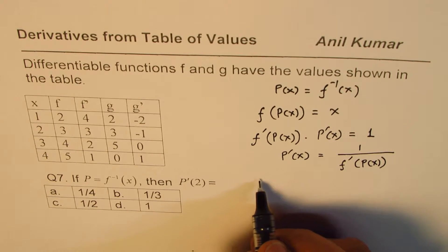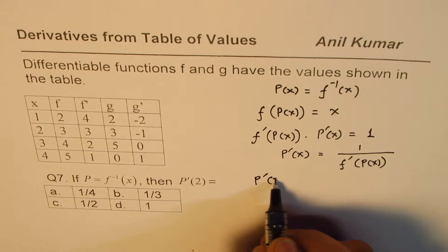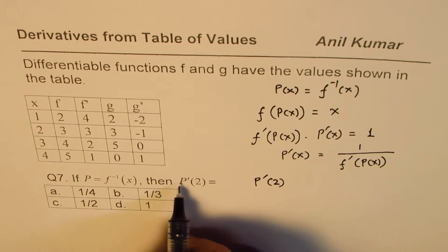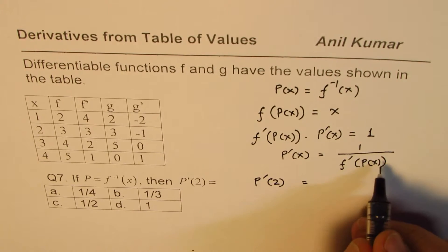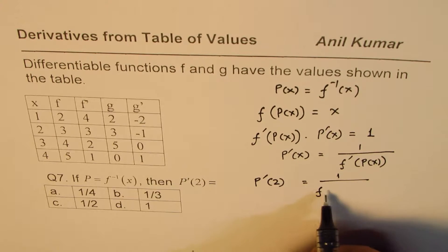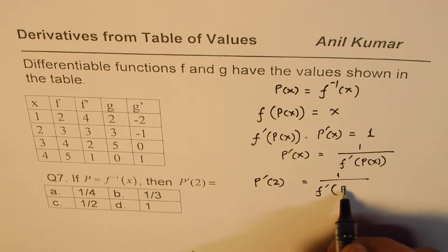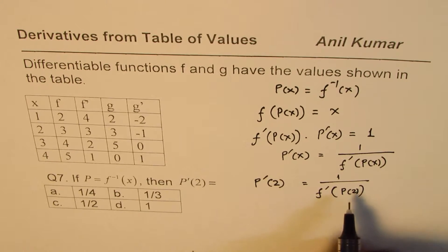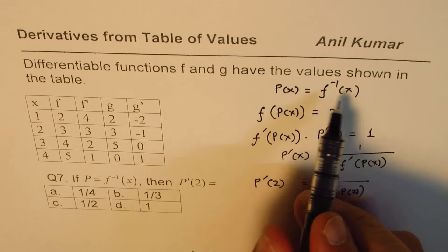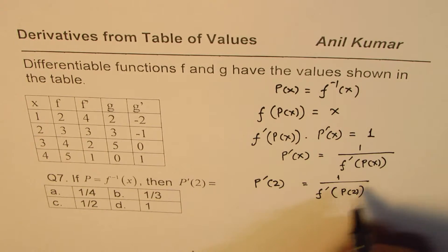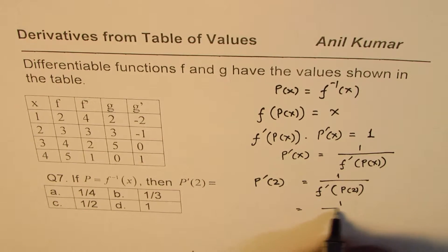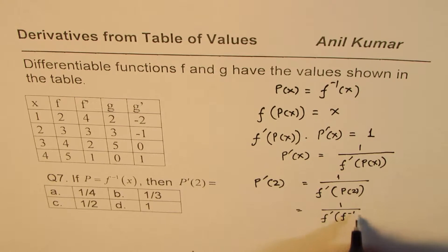Now, we need to find the derivative value for p at 2. So let's substitute 2 here. So we get 1 over f prime of p of 2. Now, p of 2 is f inverse of 2. So we will rewrite this as 1 over f prime of f inverse of 2.